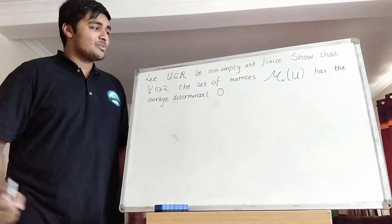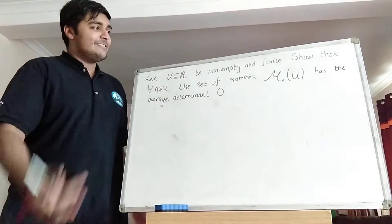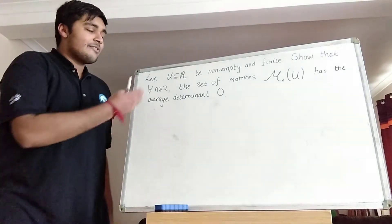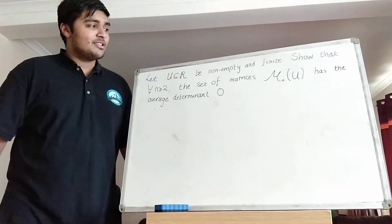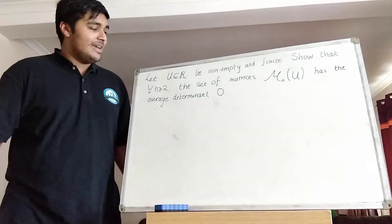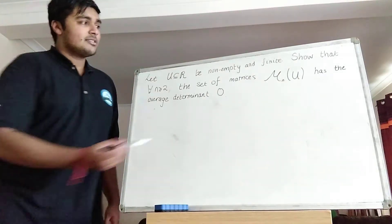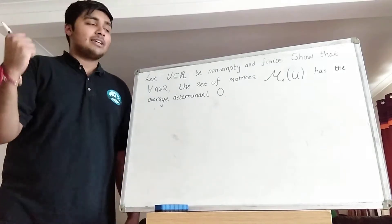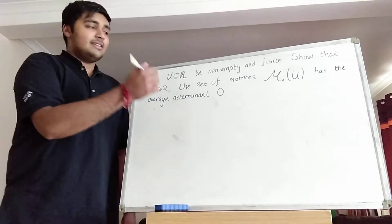We have a non-empty subset of the reals which is called u. It's non-empty and finite. We want to show that for any number n bigger than or equal to 2, the set of matrices M_n(u) has average determinant 0.